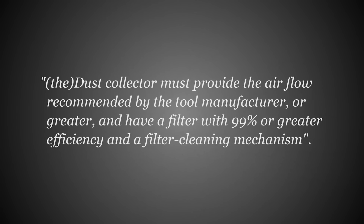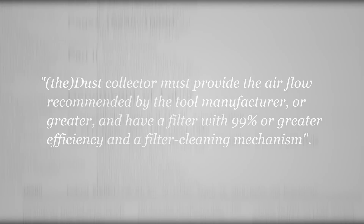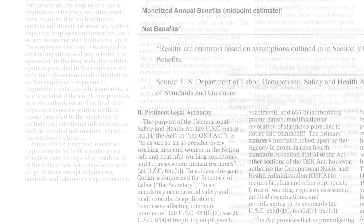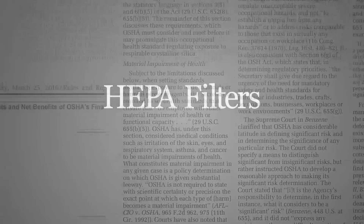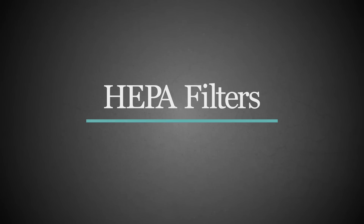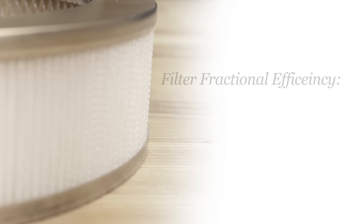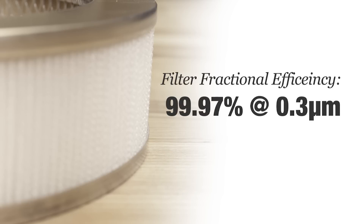To more clearly define what that statement means, we'll look to the text preceding Table 1 to gain some insight. Let's first take a look at what is written about filter efficiency. It shows us that OSHA had originally considered requiring HEPA filters, which provide a filter efficiency of 99.97% at 0.3 microns, because they believed they offered better protection from silica dust.